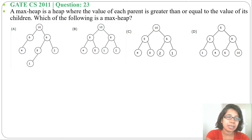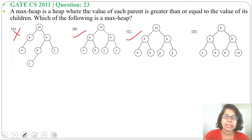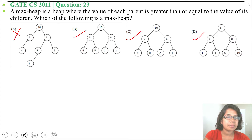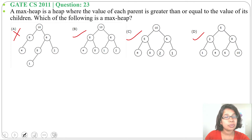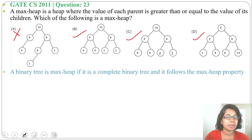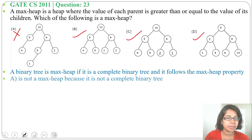Option A is not a complete binary tree, while options B, C, and D are complete binary trees. Since option A doesn't satisfy the shape property, it is not a max-heap.